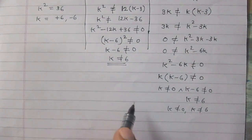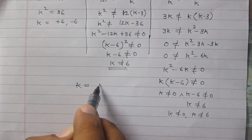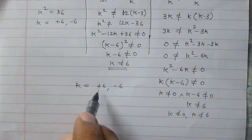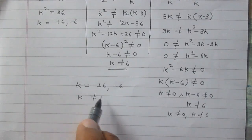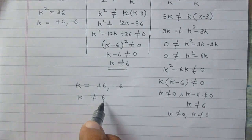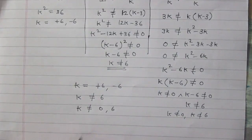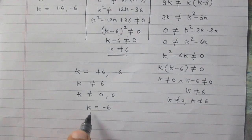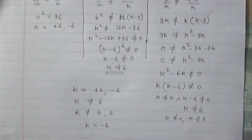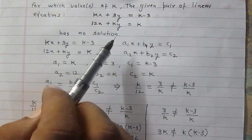Comparing all three situations: situation 1 gives k = 6 or k = -6; situation 2 says k ≠ 6; situation 3 says k ≠ 0 and k ≠ 6. The value k = -6 satisfies all three situations. Therefore, for the given pair of linear equations to have no solution, the value of k is -6.